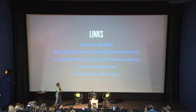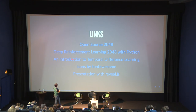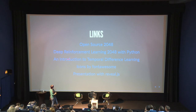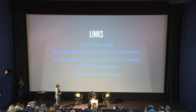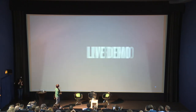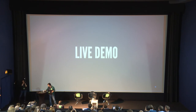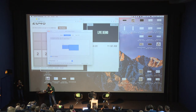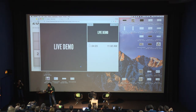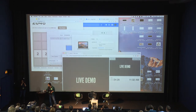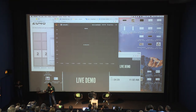You can check out these links: the open source 2048, a Python deep reinforcement learning attempt by someone else, and an introduction to temporal difference learning that's pretty easy to understand even if you're not a data scientist. The hardest thing about working on this is not getting distracted by the game — you start the simulation and you just can't stop watching it.